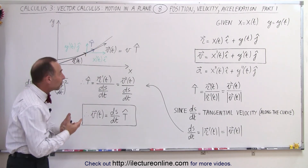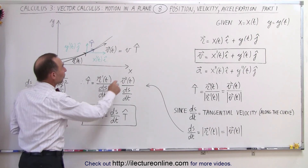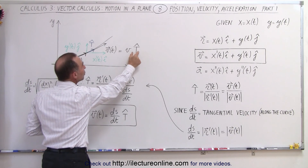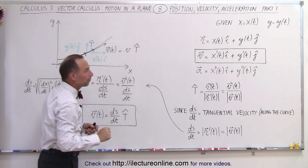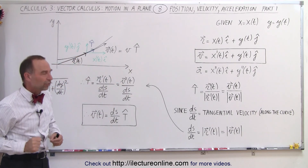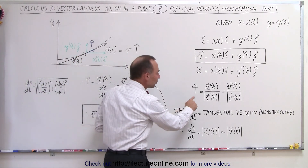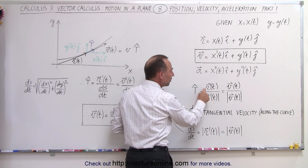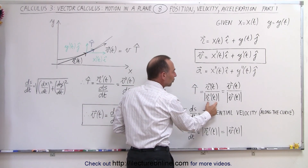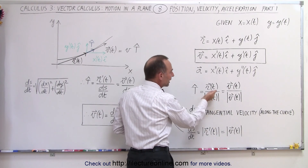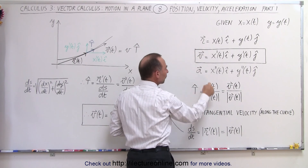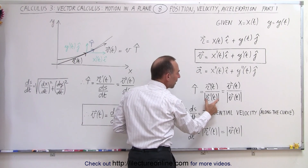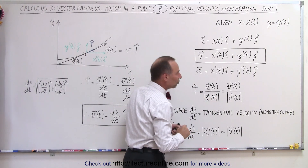We can also express the velocity vector in terms of the magnitude of the velocity times the unit tangent vector. The unit tangent vector is defined as the velocity vector divided by the magnitude of the velocity — in other words, the derivative of the position vector divided by the magnitude of the derivative of the position vector.